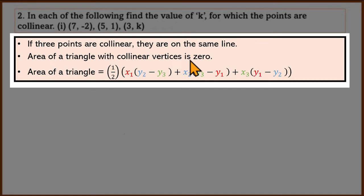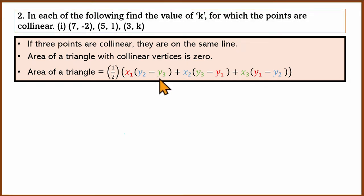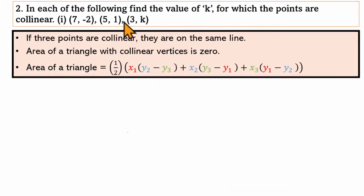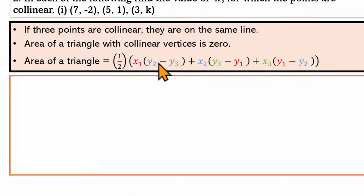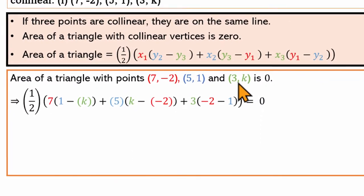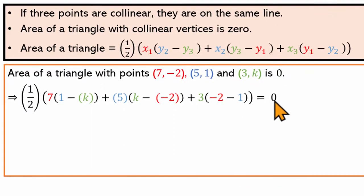If 3 points are collinear, they lie on the same line. The area of a triangle with collinear vertices is 0. If you have half base times height and all points are on one line, the height is 0, so the area of the triangle is 0. We will use the area of the triangle formula and equate it to 0 to find the value of k.